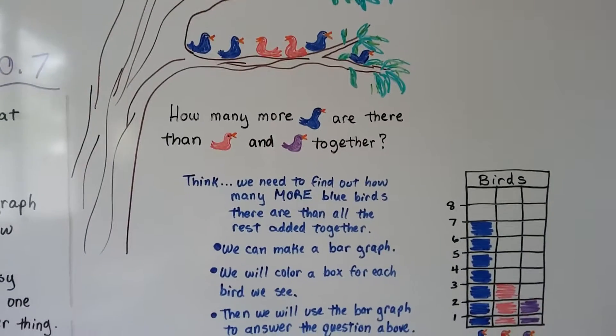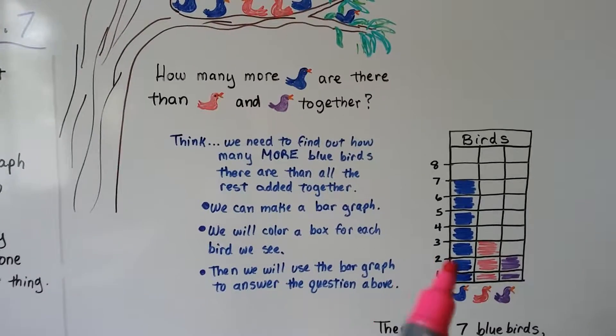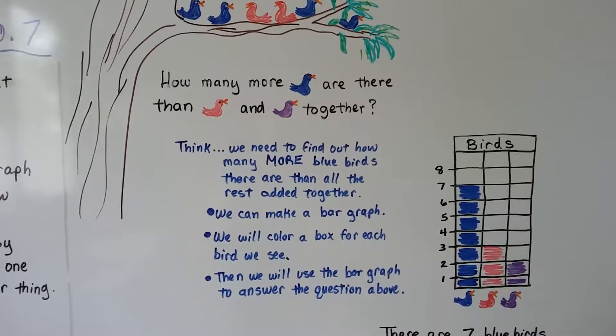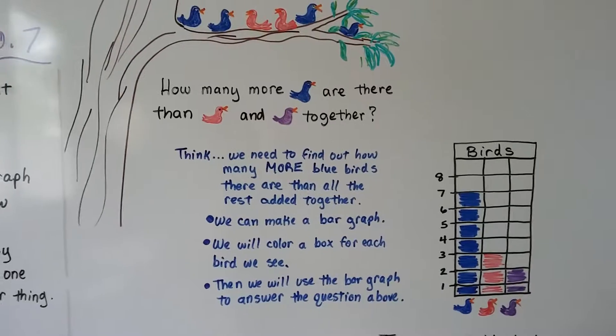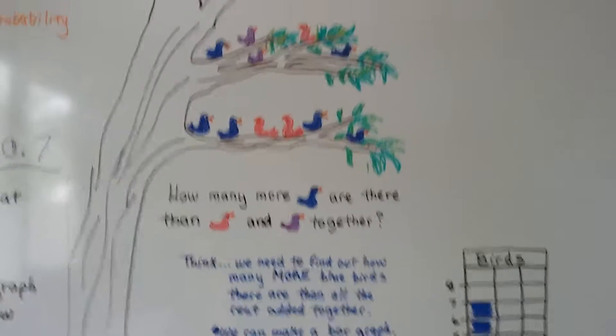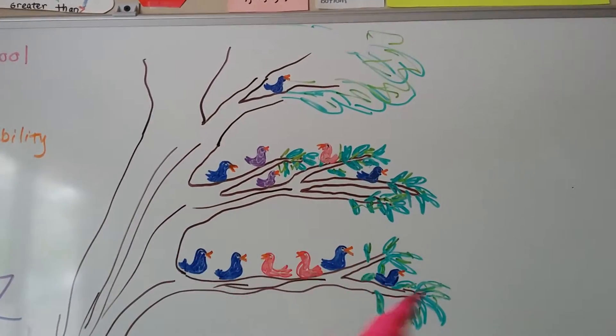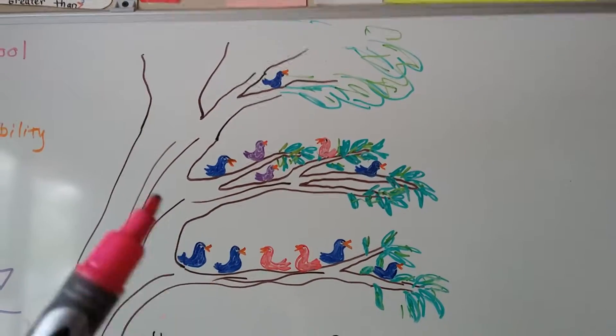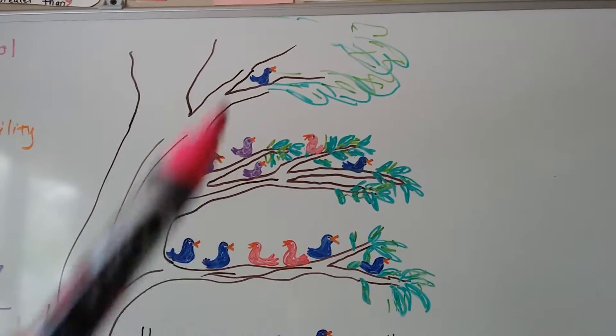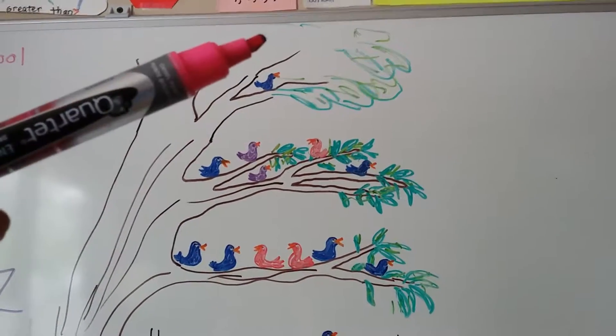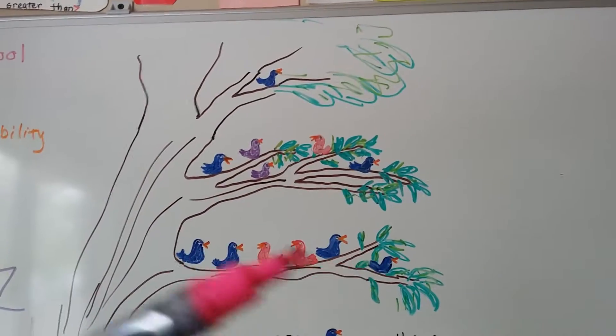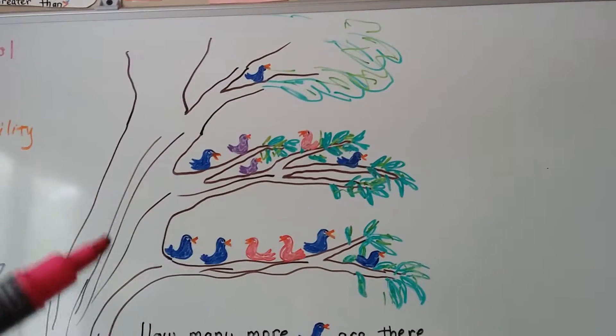Okay? So we can make a bar graph. And we'll color a box for each bird we see. And then we'll use the graph to answer the question above. So let's count the blue ones. And when you see something like this where they're all over the place and you need to count them, don't skip back and forth like this.